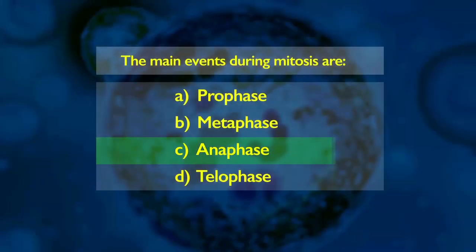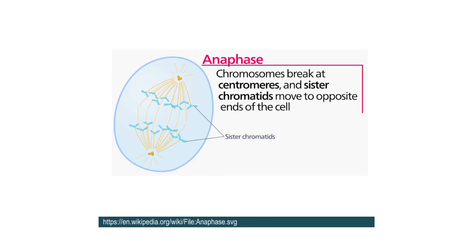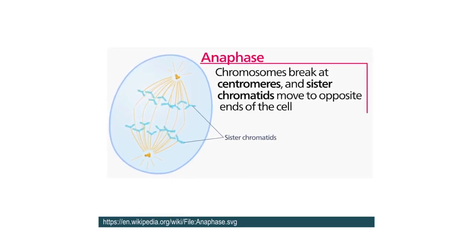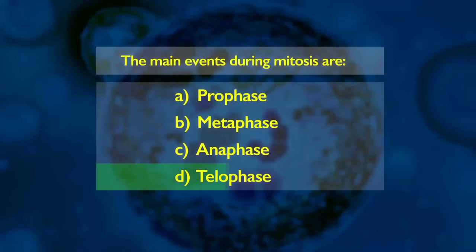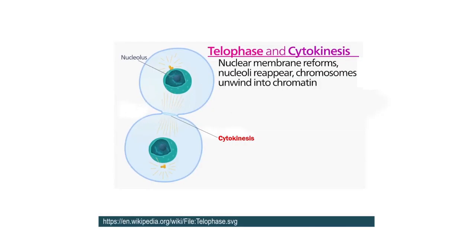The third phase is anaphase. This stage is characterized by the splitting of the centromeres and the migration of the sister chromatids towards the opposite poles of the cell. The last phase is telophase. It is the last stage of mitosis, during which the chromatids reach the opposite poles of the cell, followed by the disappearance of the spindle, decondensation of the daughter chromosomes to form chromatin fibers, and reformation of the nuclear membranes and nucleolus. It is finally followed by cytokinesis or the partitioning of the cell, which may involve the formation of a cell plate or new cell wall between the two daughter nuclei in plant cells.